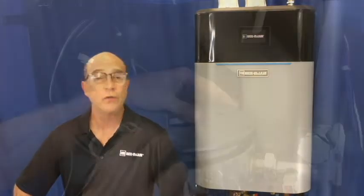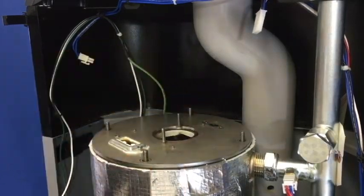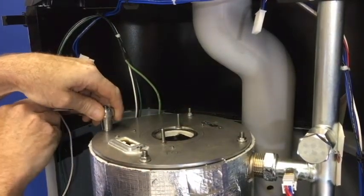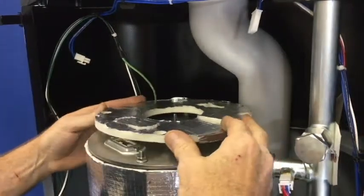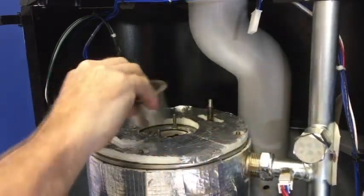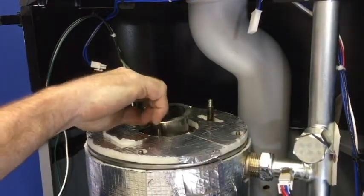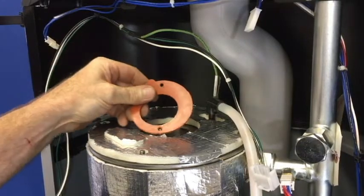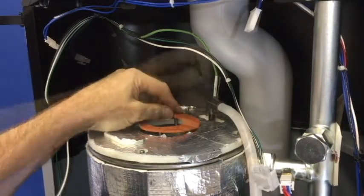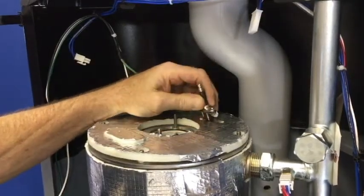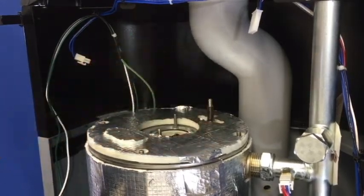Reinstall the control module, the burner, burner insulation and gasket onto the cover plate. Reinstall the igniter and gasket and the blower Venturi and gas valve.